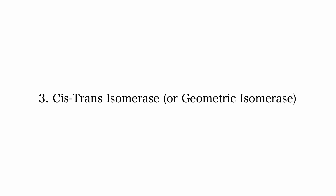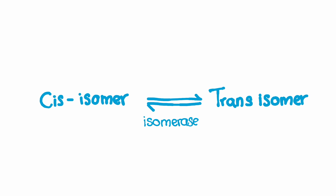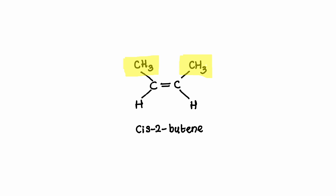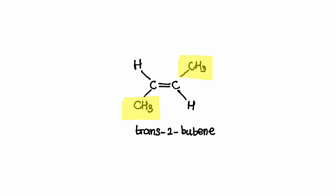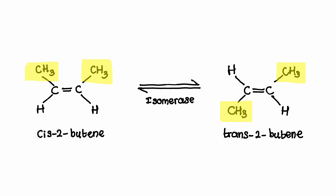Then we have cis-trans isomerases. Cis-trans isomerases catalyze the conversion between cis and trans isomers. Cis isomers have similar atoms or groups on the same side of the double bond or a ring, whereas trans isomers have these atoms or groups on opposite sides. Cis-trans isomerases facilitate the rearrangement of atoms or groups around the double bond, promoting the conversion from one geometric isomer to another. This enzymatic transformation is necessary in biological processes where the spatial arrangement of atoms profoundly affects molecular function — for example, this is extremely relevant in fatty acids.